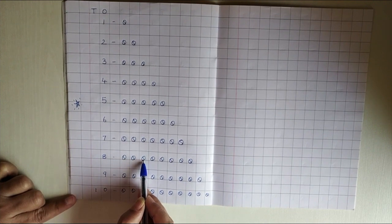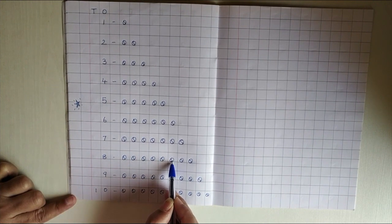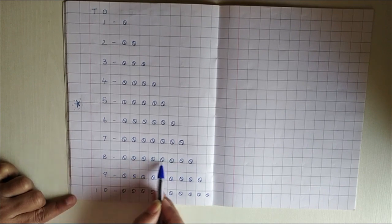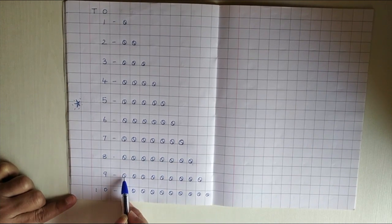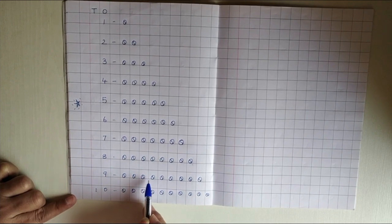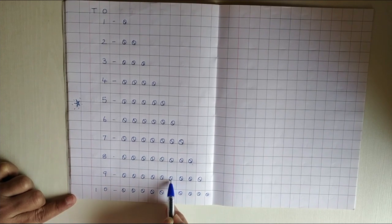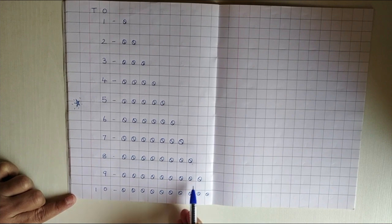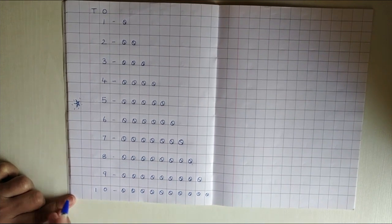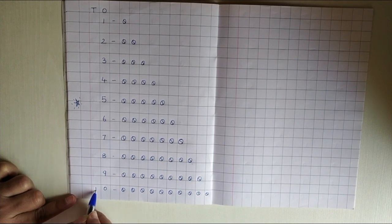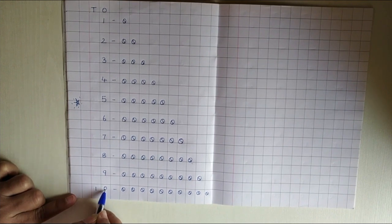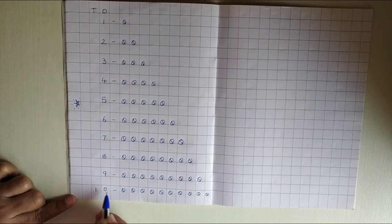Number 8: 1, 2, 3, 4, 5, 6, 7, 8. There are 8 balls over here. Number 9: 1, 2, 3, 4, 5, 6, 7, 8, 9. There are 9 balls. And this is the last number, 10. 1 is in the tens place and 0 is in the ones place, children.